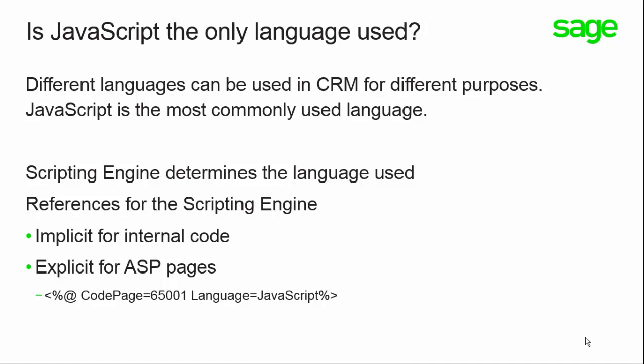In theory, different languages can be used in Sage CRM for different purposes, but JavaScript is the default language and is nearly universally used. For all intents and purposes, this should be the language that you use for scripting inside Sage CRM. JavaScript is processed and executed by a scripting engine, and it's the scripting engine that determines the default language used in each circumstance — whether that's in the browser or inside an ASP page. References to the scripting engine are either implicit or explicit. Any internal code executed on the server — such as field level scripts, workflow conditions, and table level scripts — are all implicitly JavaScript.